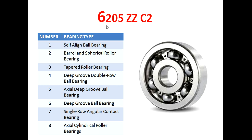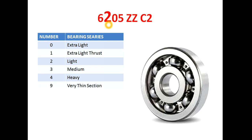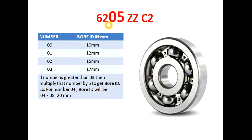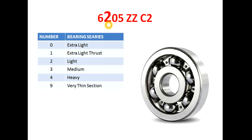Now we will see the description of the second digit. The second digit describes the bearing series. If 0 is mentioned, it describes the extra light series. 1 describes the extra light thrust bearing series. 2 describes the light series. 3 describes the medium series. 4 describes the heavy series. 9 describes the very thin structure.